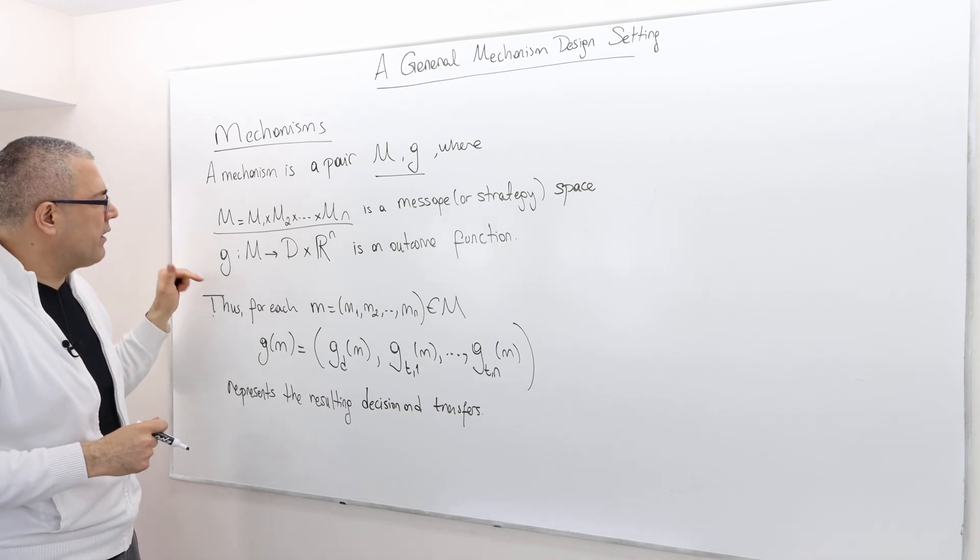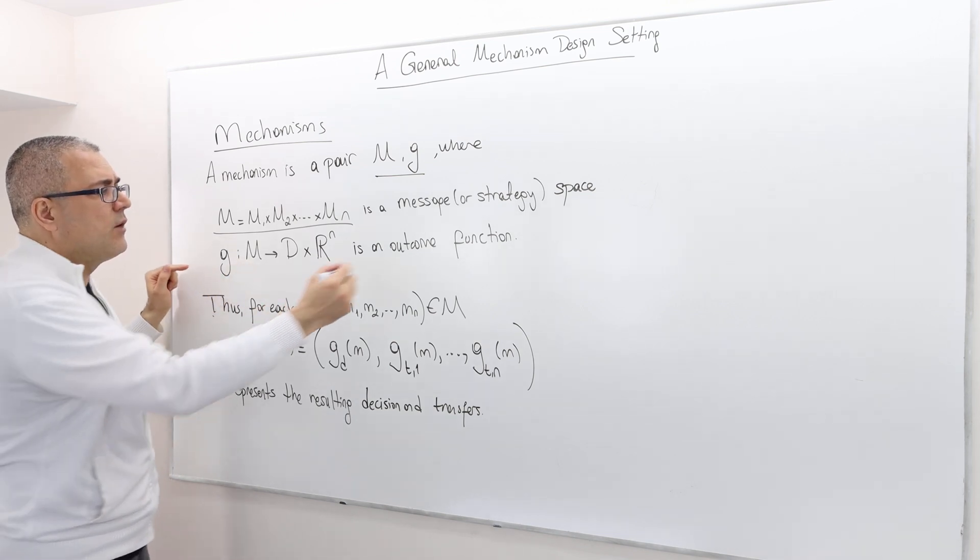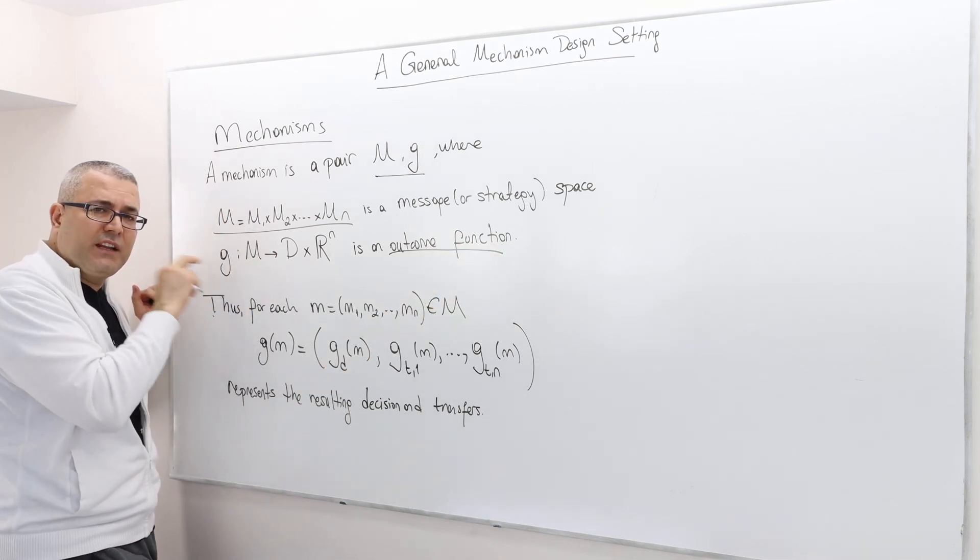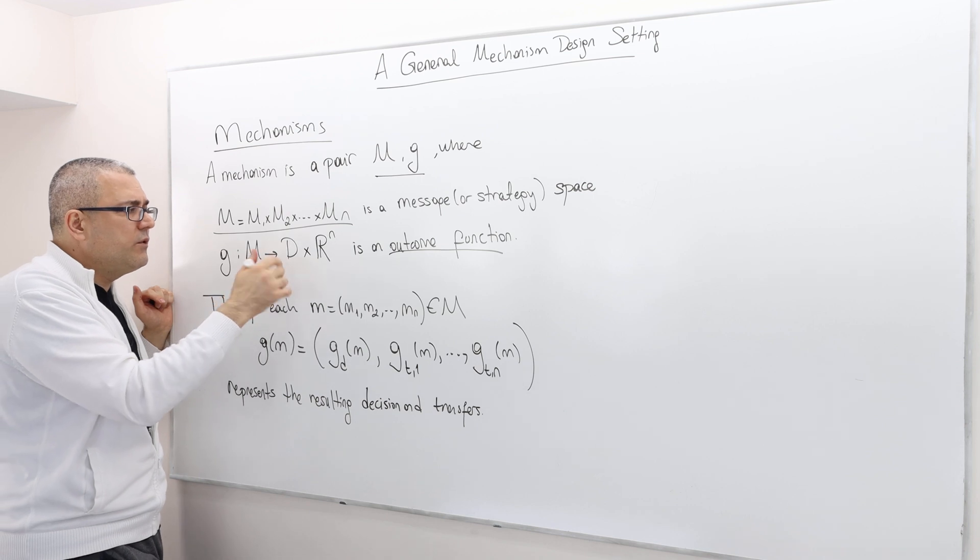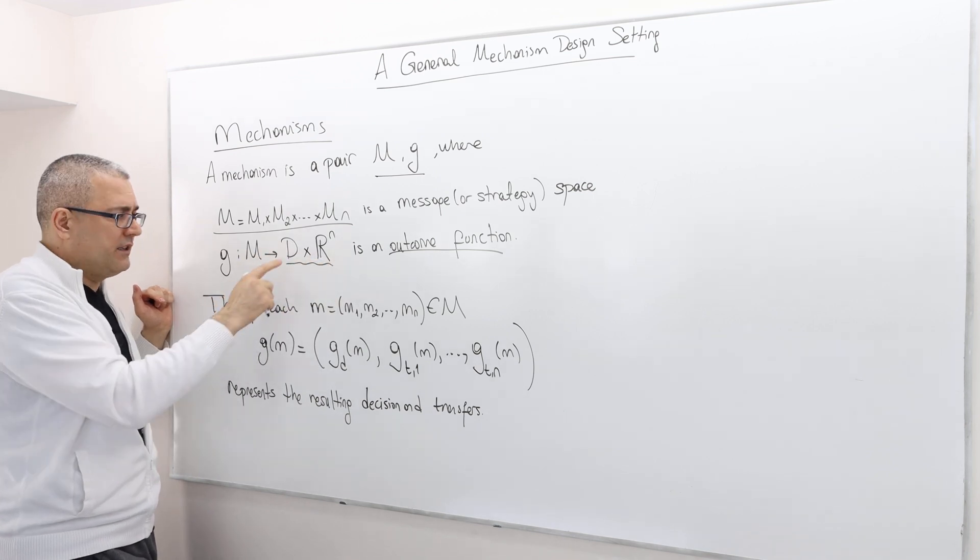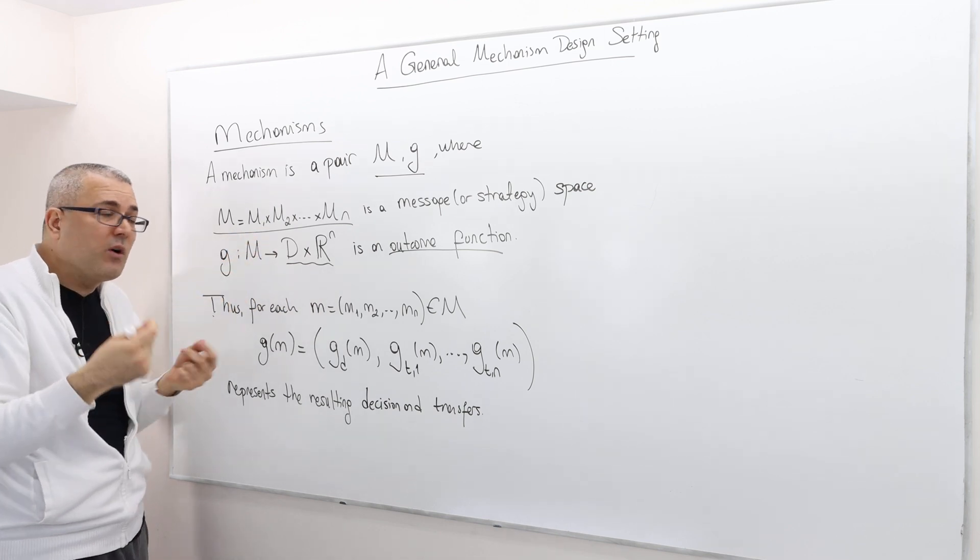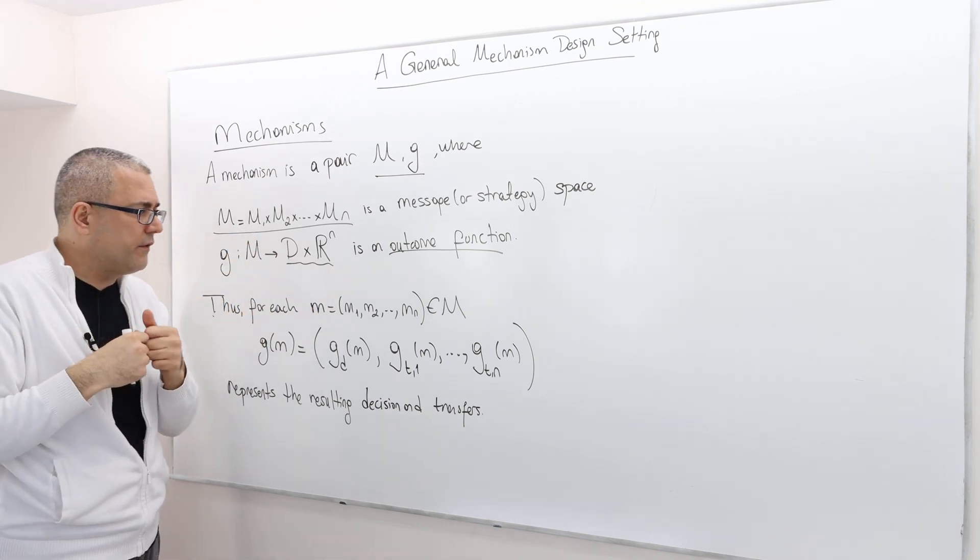What is G, however? G is what's called outcome function. It maps each message or strategy profile into D and R^N, the decision, the social decision and R^N. Well, this is going to be the transfer part of it.